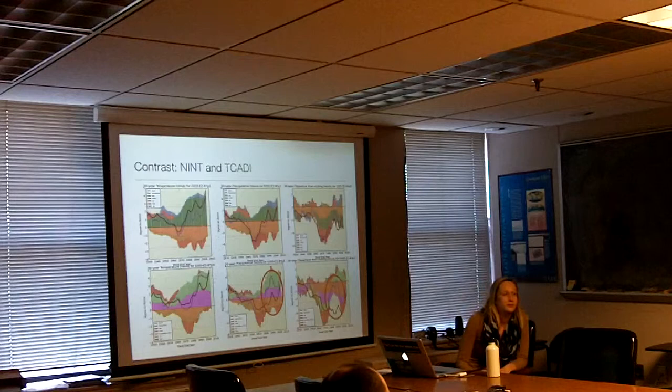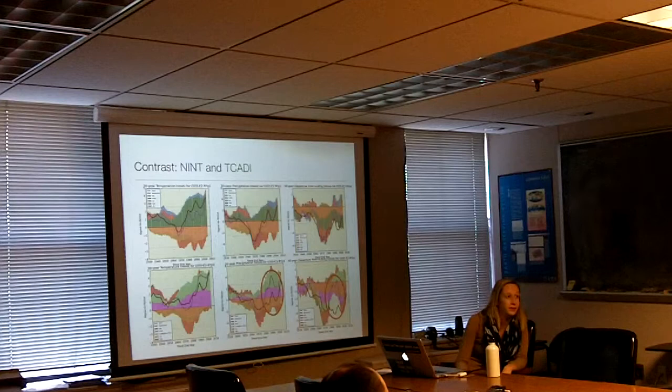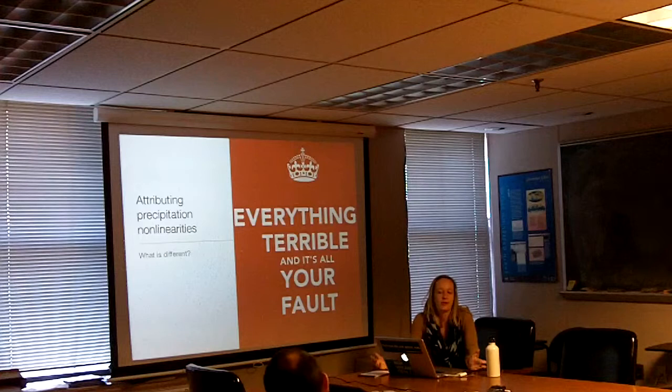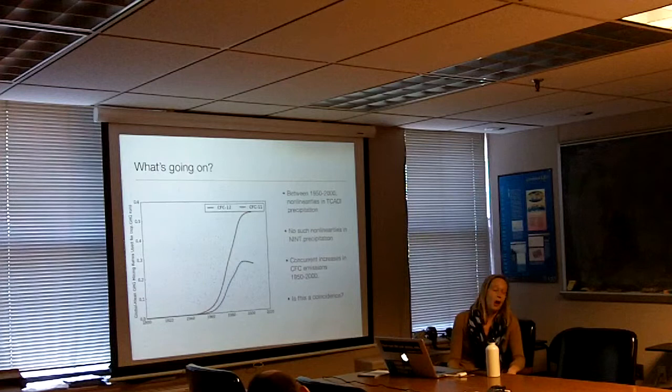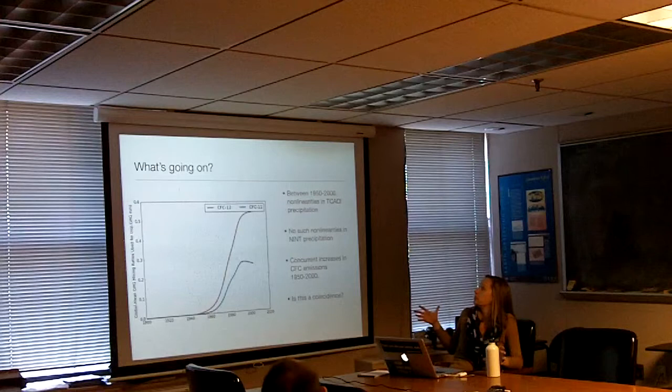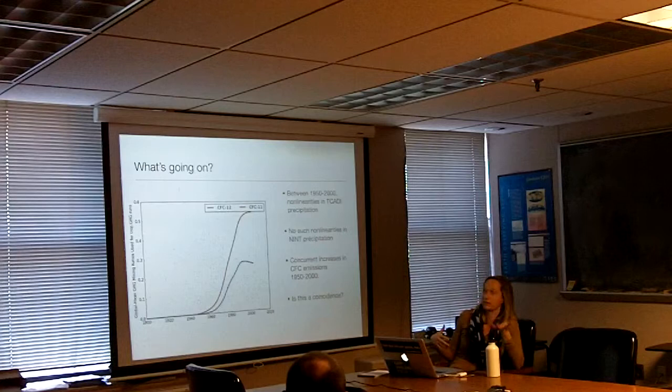This is single-forcing versus the historical runs — there are no observations here. We notice that between about 1950 and 2000, we start seeing non-linearities in the TCAT precipitation, but no such non-linearities in the NINT precipitation. There are concurrent increases in CFC emissions over this time period. Is this a coincidence? The answer is no.